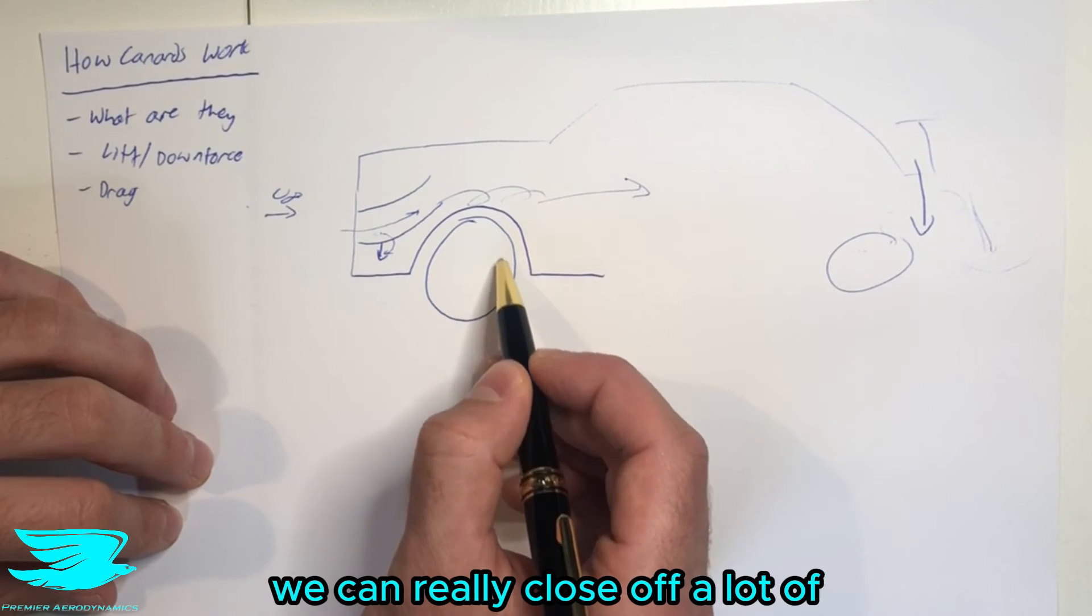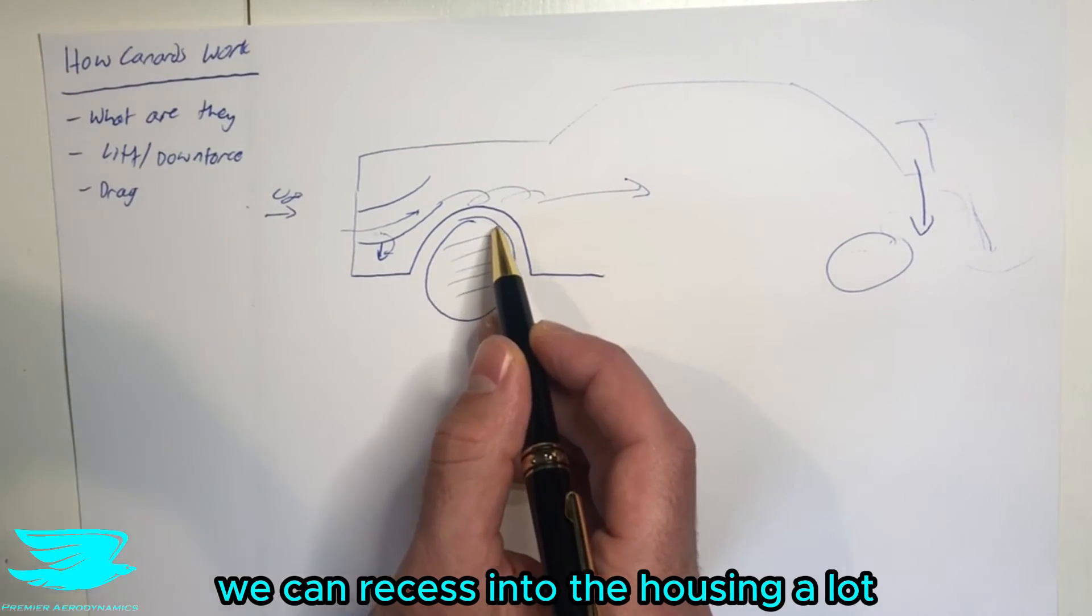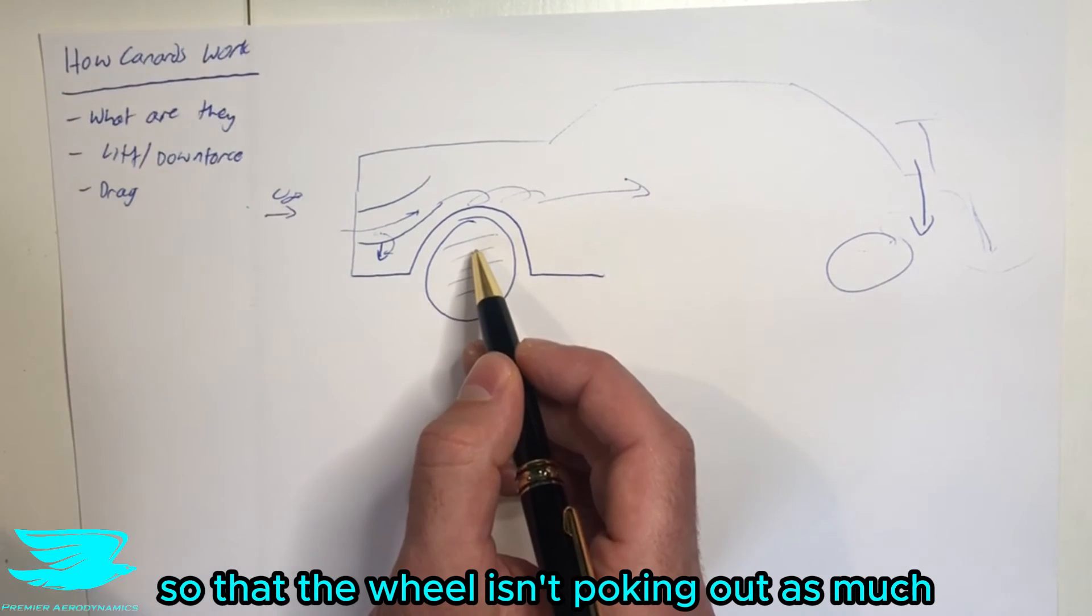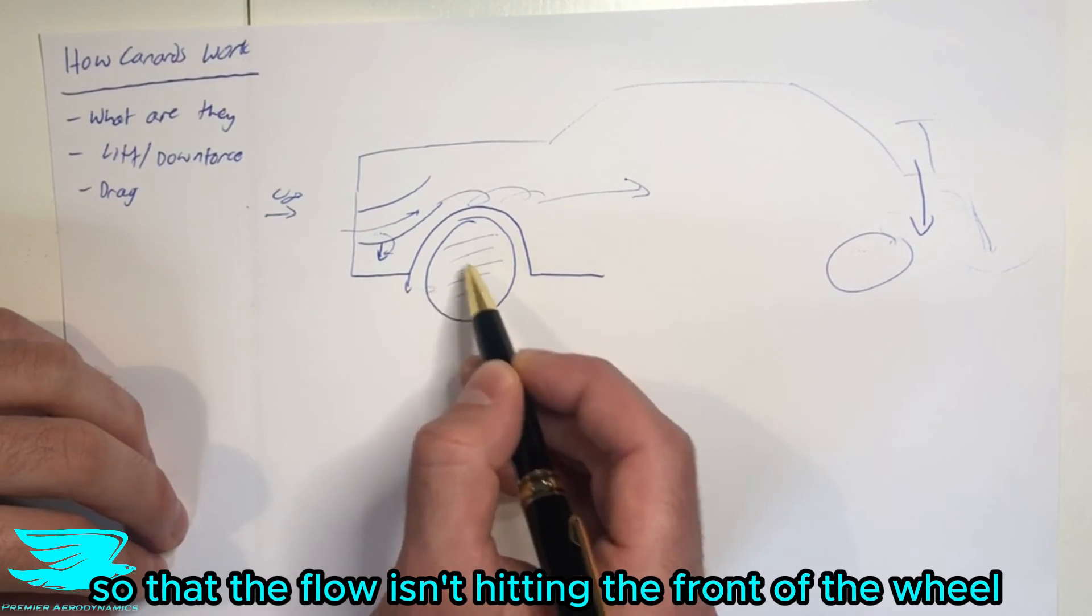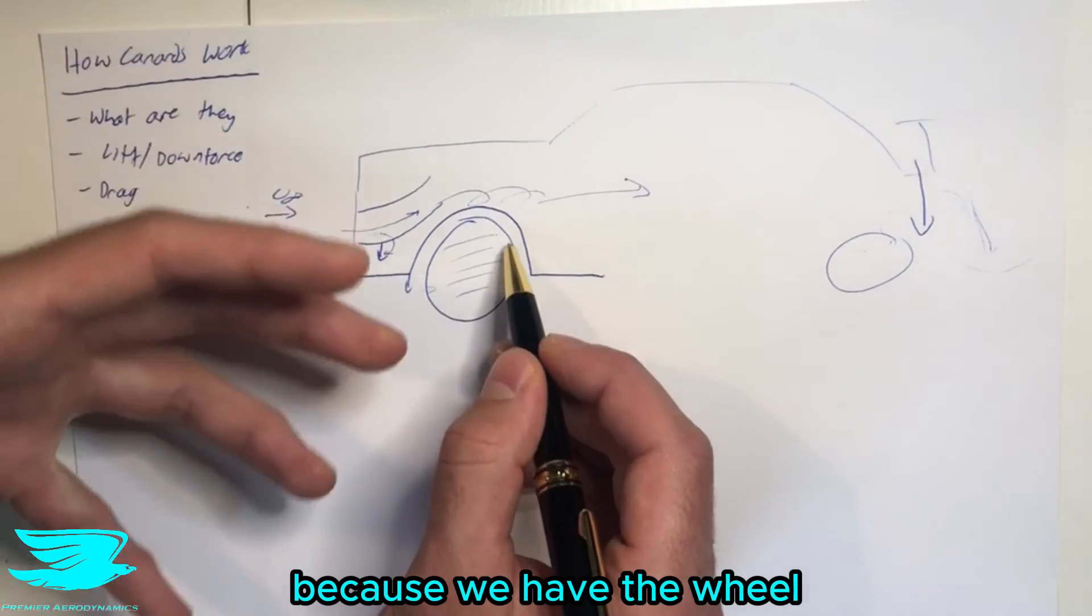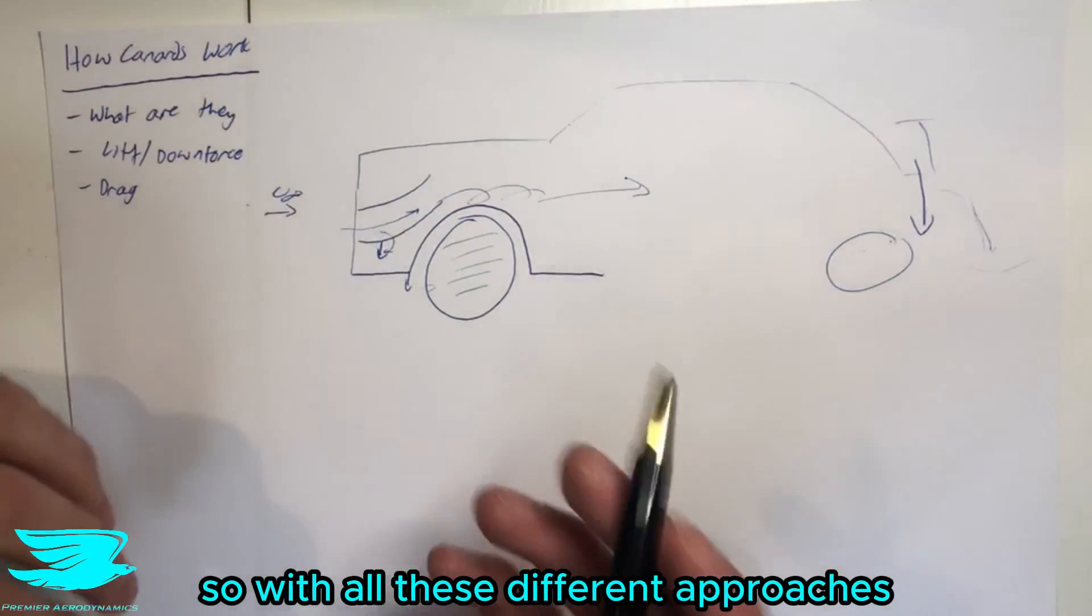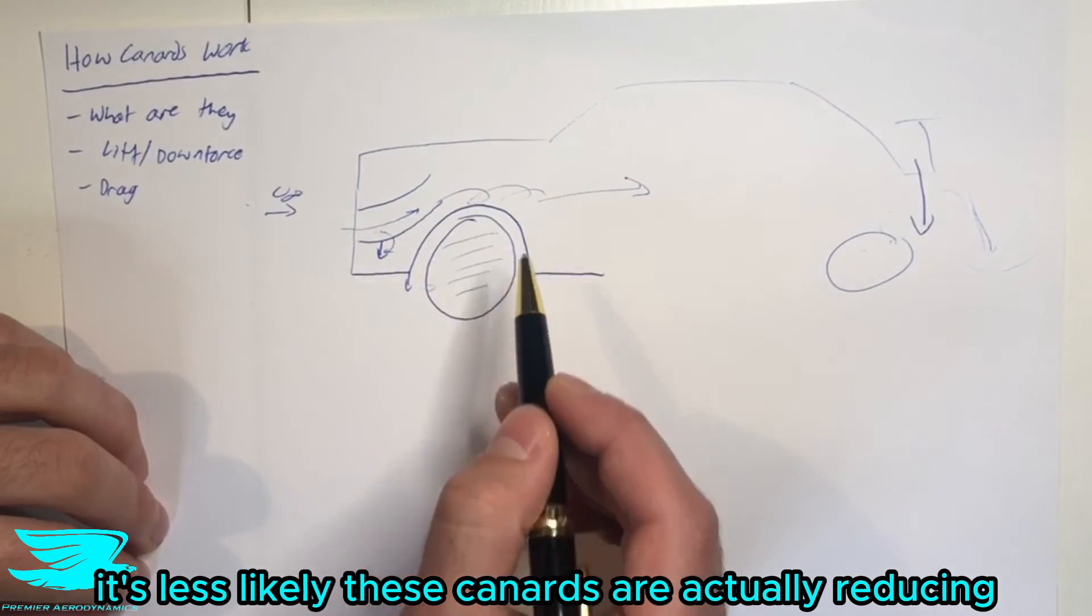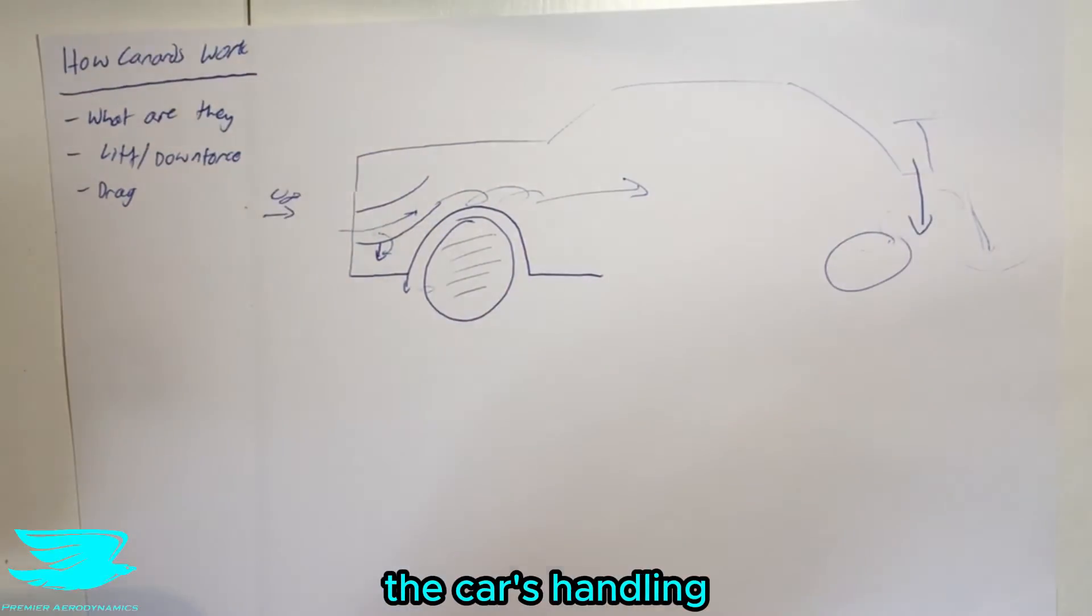For example, we can really close off a lot of the rim to reduce the drag that way. We can recess it into the housing a lot so the wheels aren't poking out as much. We can bring this surface down so that the flow isn't hitting the front of the wheel, and we can also reduce how much flow is actually going into the wheelhouse and coming out because we have the wheel taking up more of the wheelhouse volume. So with all these different approaches, it's less likely that these canards are actually reducing the drag in this situation. They're a lot more for downforce and balancing out the car's handling.